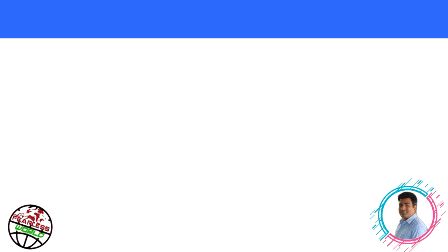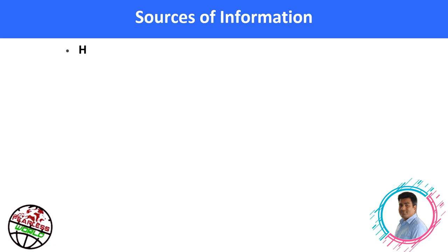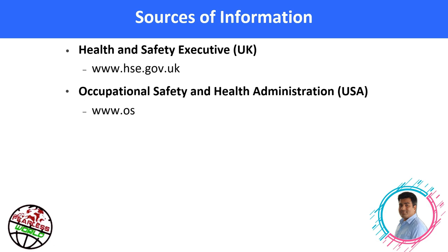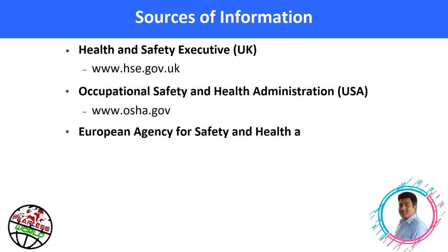Information on national standards can be obtained from the relevant national regulatory bodies, who publish guidance documents providing information on the legal standards required. Many regulatory bodies have websites which are valuable sources of information, such as the Health and Safety Executive (UK), the Occupational Safety and Health Administration (USA), the European Agency for Safety and Health at Work (EU), and WorkSafe Western Australia.